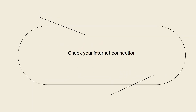Next, check your internet connection. Ensure that you have a stable and reliable internet connection. Poor connectivity or intermittent network issues can cause problems with validating signatures. Switch to a different network such as Wi-Fi or cellular data to see if the error persists.